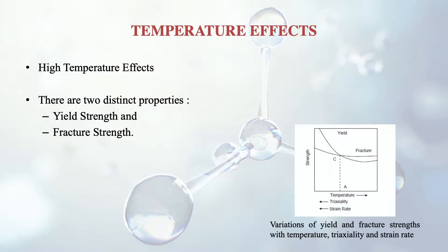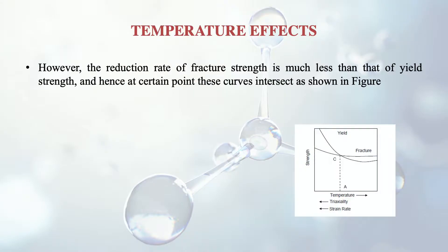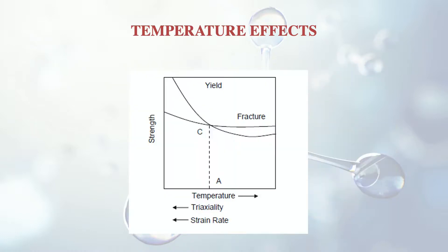High temperature also has quite a lot of effect on steel material. There are two distinct properties: yield strength and fracture strength. Both of these properties decrease with increasing temperature and reducing strain rate and tri-axiality. However, the reduction of yield strength is much faster than the reduction in fracture strength, as seen by the steeper slope of the yield strength curve. As a result, the two curves — yield strength and fracture strength — will intersect at some point marked by a transition line CA on the graph.